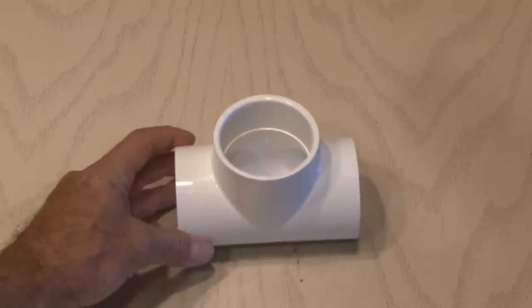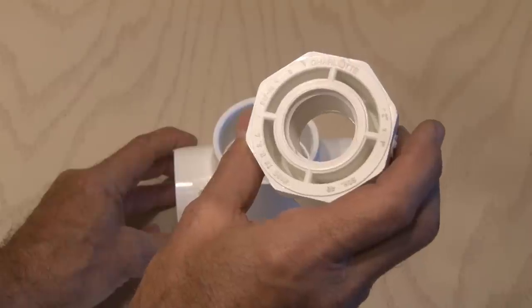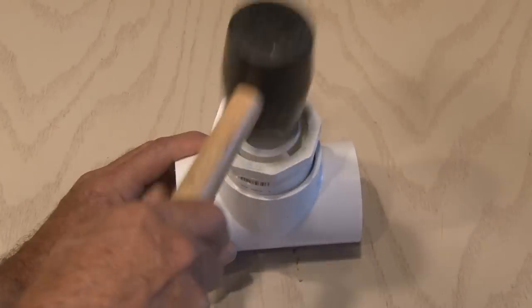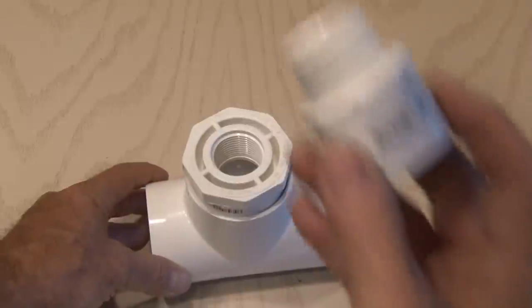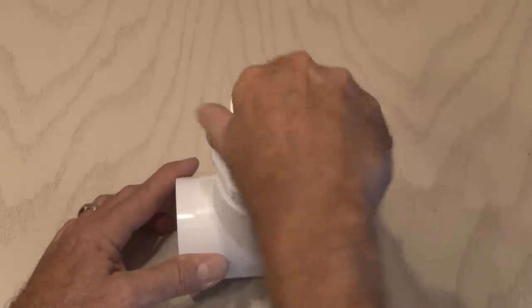All right, let's get to work and build this. Grab the 2-inch T and the 2-inch to 1-inch threaded adapter, and that goes in the center part of the T. Go ahead and pound it in. Then we'll take our 1-inch threaded adapter and screw that in. It doesn't need to be super tight. Just hand tight is fine.